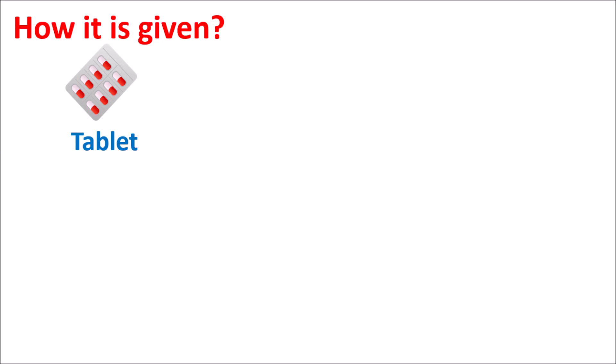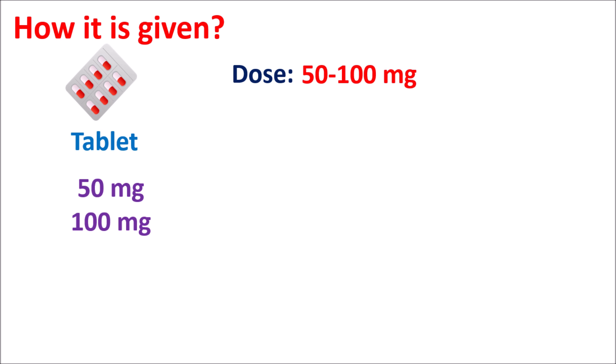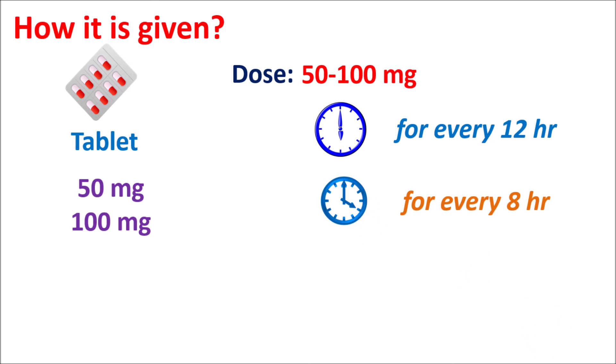Now let us see how this drug is given. Flecainide is available as a tablet at different strengths such as 50 mg and 100 mg. The initial dose is started at a low dose such as 50 mg, but the dose is variable based on clinical use. The starting dose range is 50 to 100 mg given every 12 hours to control irregular heartbeats, though the dose interval may vary based on patient conditions — in some patients it can also be given every 8 hours.